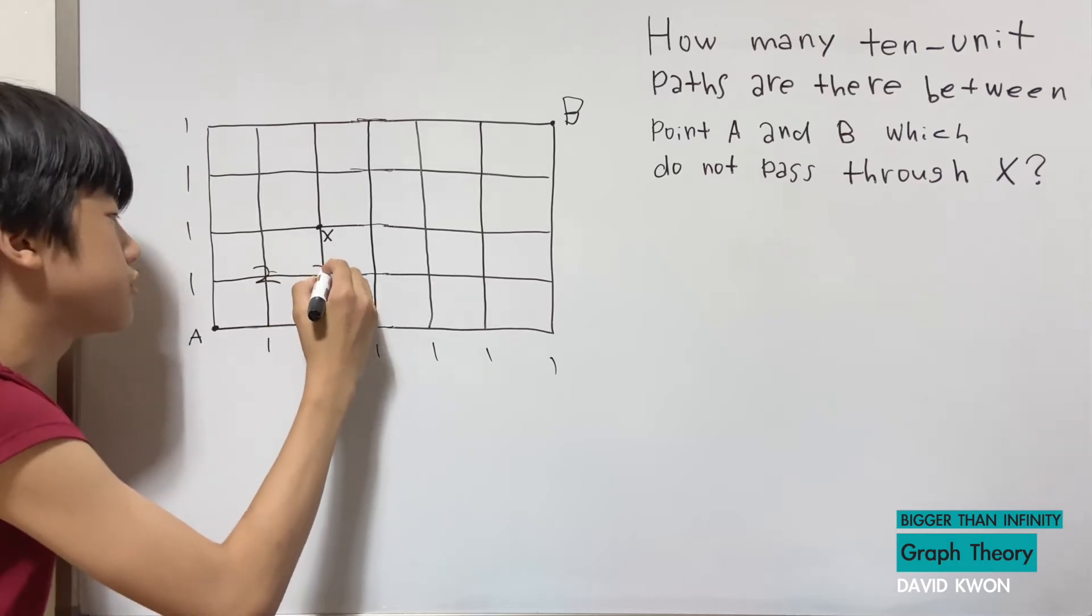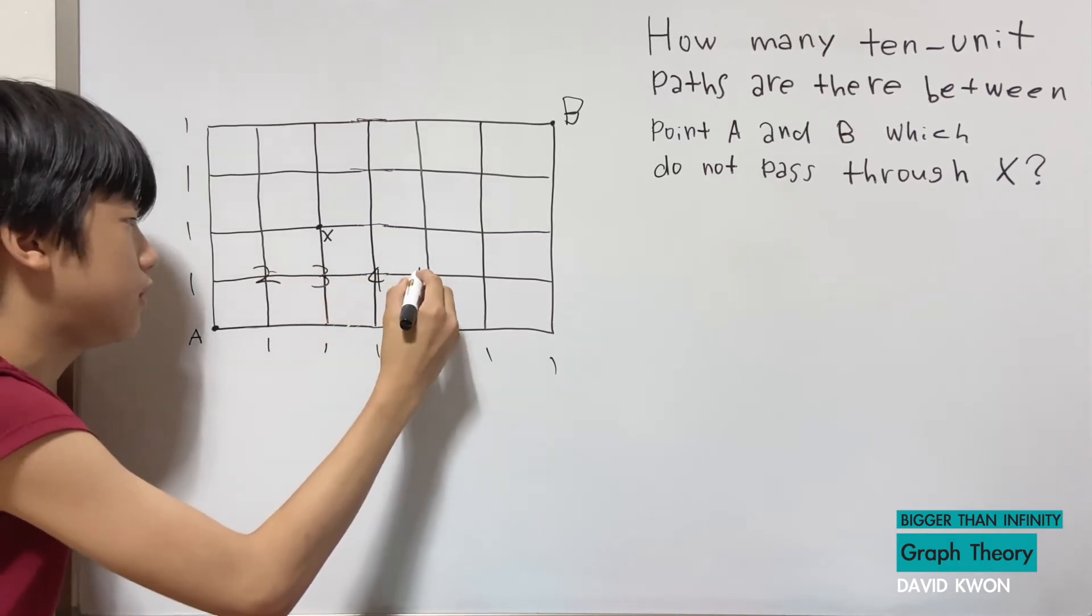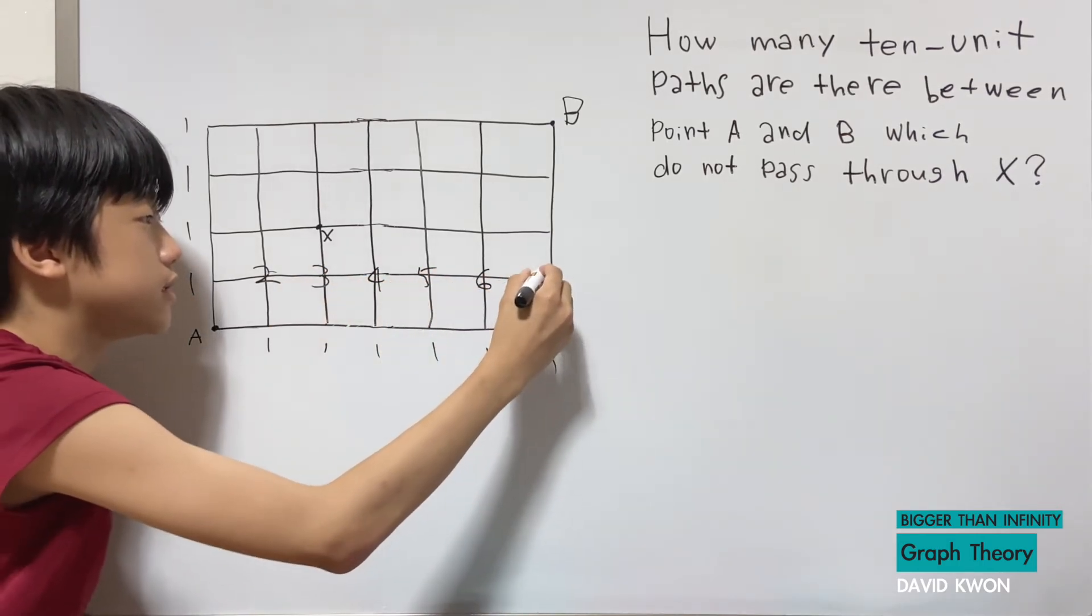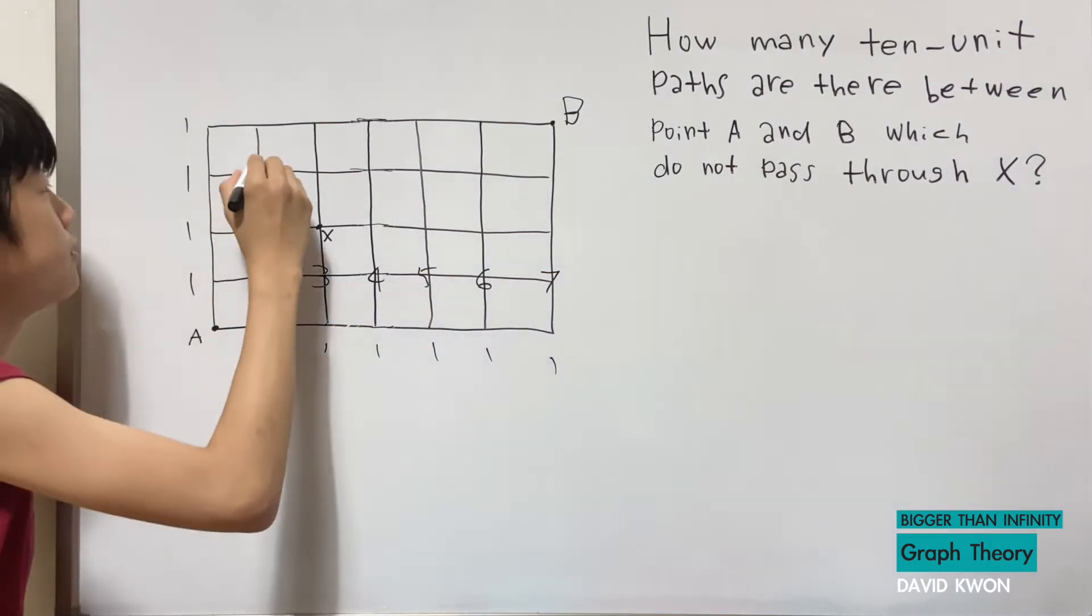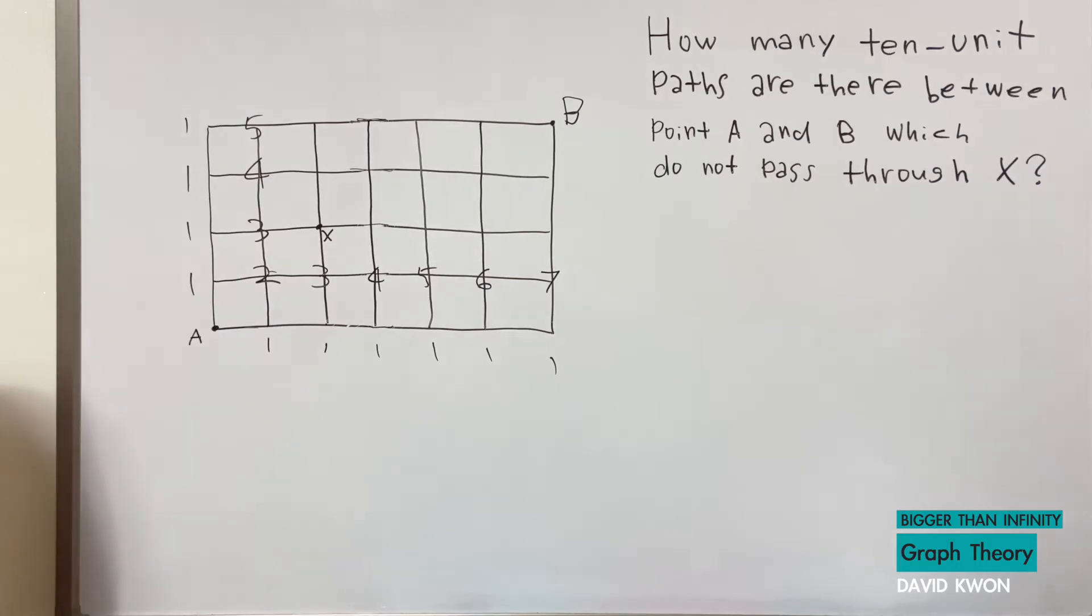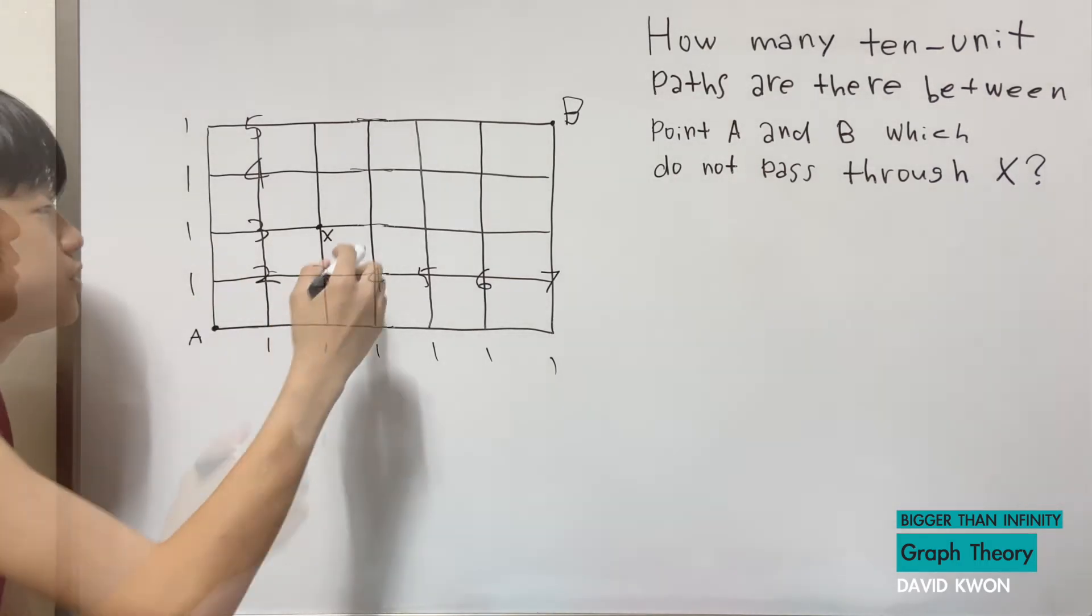And this will be four, five, six, and seven. This will be three and this will be four and this will be five, just writing it by what we know.